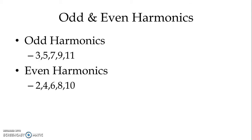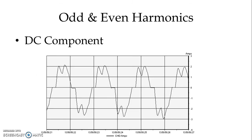Then we have odd and even number of harmonics. As the name indicates, three, five, seven, nine, eleven are odd numbers and are known as odd harmonics. Same way, two, four, six, eight, ten are even harmonics. We refer to one for the fundamental component and we use zero for the DC component or constant.